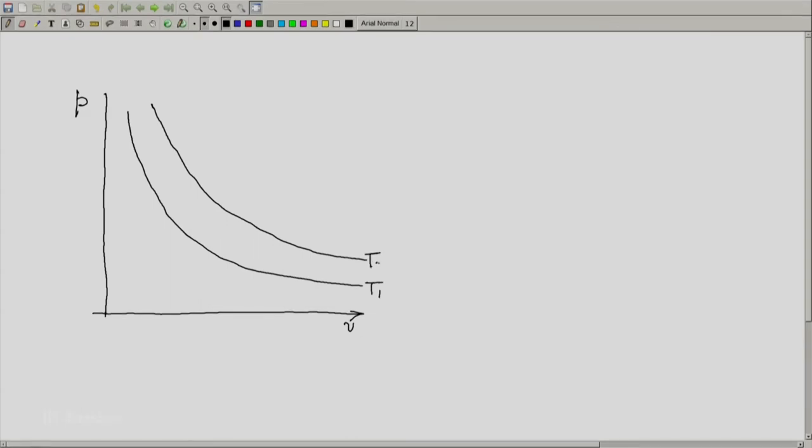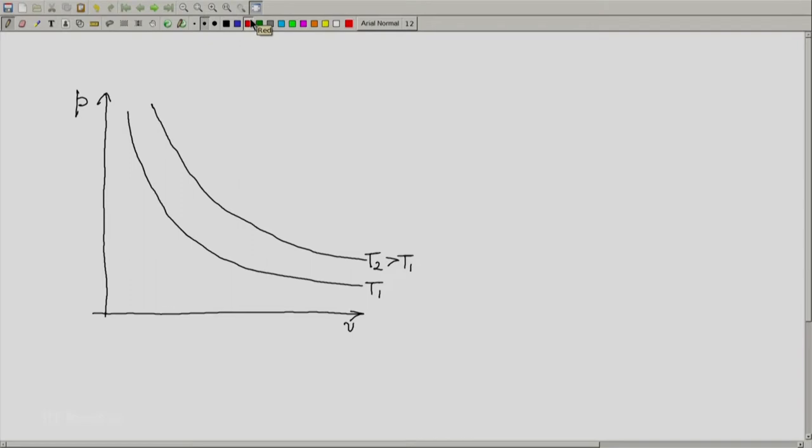T1, this is T2 greater than T1. How will the isentropic line look like? Isentropic lines are steeper than isothermal lines.